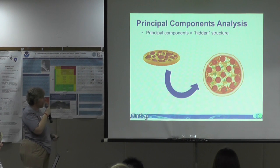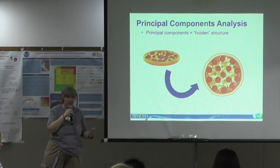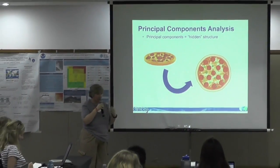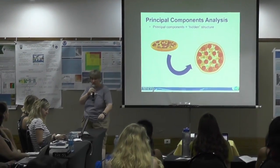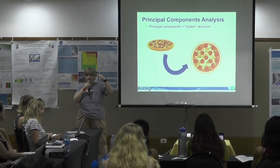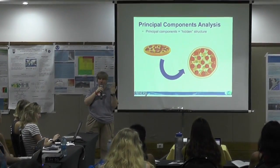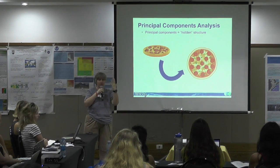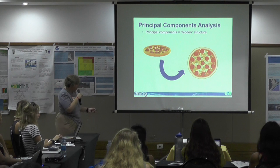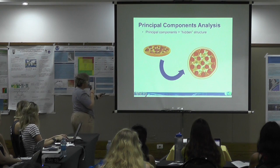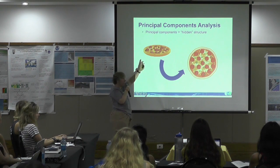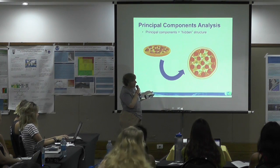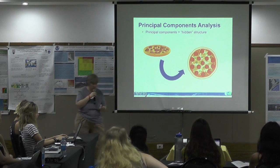My statistics professor described PCA using pizza. If you have a pizza on its side, you can't tell what's really there. But if you rotate it, you have a very good idea of what's on it. Think of the pepperoni as the data points: if the pizza is on its side you can't see how the data points are spread out — they're all on top of each other. But once you rotate it, you can see the patterns and how they spread out.